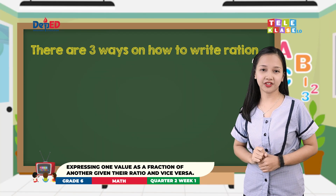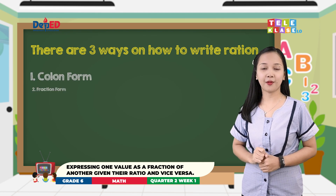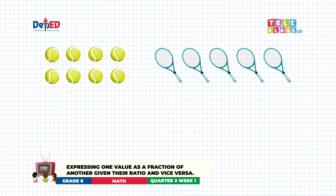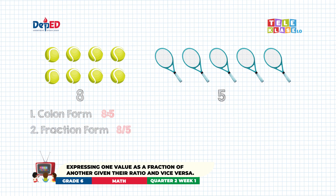There are three ways on how to write ratio. Number one: colon form. Number two: fraction form. Number three: word form. Using the first example, we will compare the number of balls and number of rockets using the three ways of writing ratio. How many balls do we have? We have eight balls. How about the rockets? We have five. In colon form, we will use the colon or total dot to separate the two quantities: eight is to five. While in fraction form, we will use the fraction bar, wherein the first quantity is the numerator and the second quantity is the denominator. And in word form, we will use the words 'is to' in separating the quantities: eight is to five.